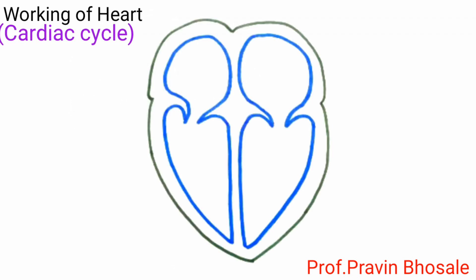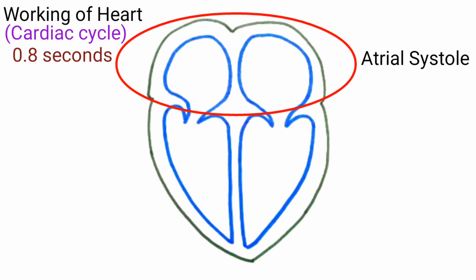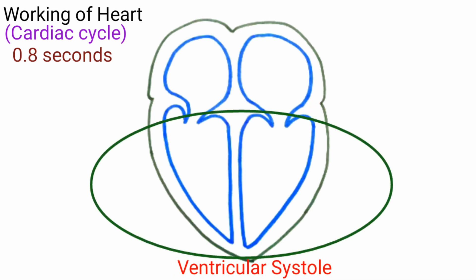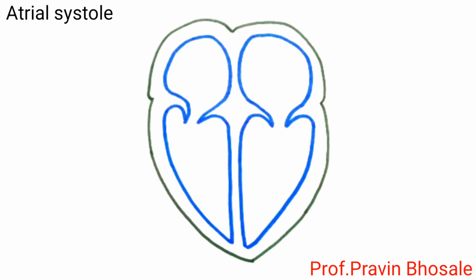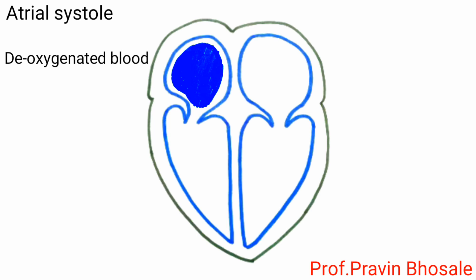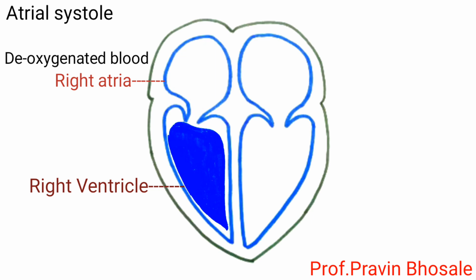The events associated with one heartbeat are called the cardiac cycle. It lasts for about 0.8 seconds. Each heartbeat includes atrial systole, ventricular systole, and joint diastole.